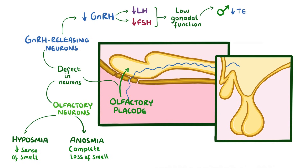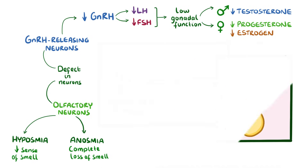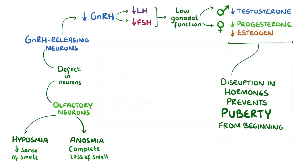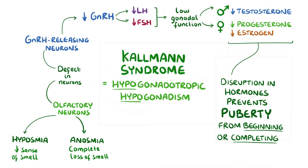In males, there's a decrease in testosterone, and in females there's a decrease in progesterone and oestrogen. The disruption in hormones prevents puberty from beginning or successfully completing. Because of this, Kallmann syndrome is a type of hypogonadotropic hypogonadism disorder.